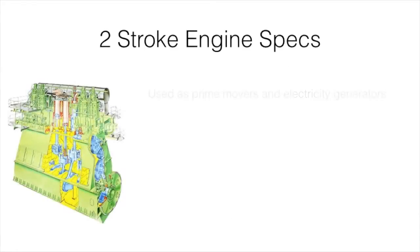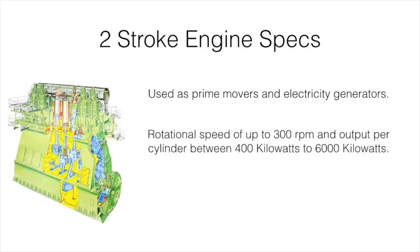Low speed two-stroke crosshead diesel engines are generally used as prime movers on ships and also used for electricity generation on shore-based power plants. The term low speed is applied to engines having a rotational speed of up to 300 RPM.